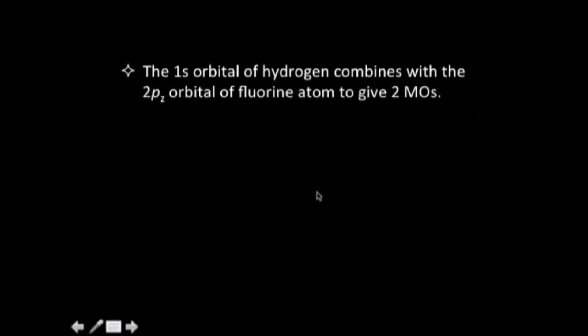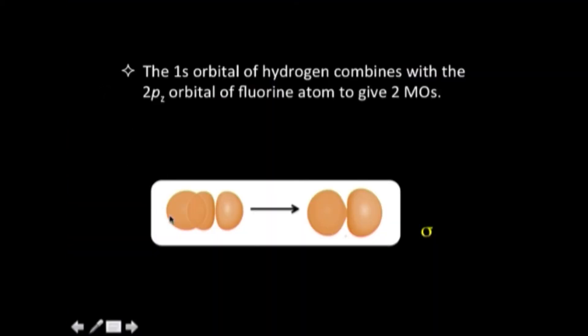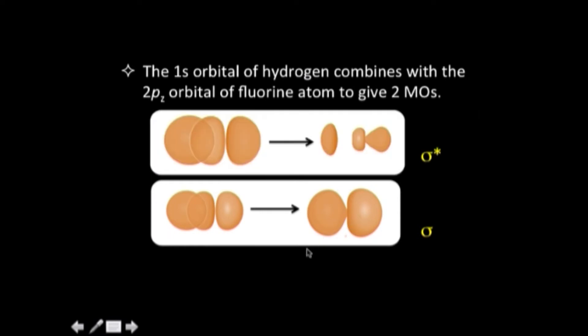Effectively, what will happen is that the 1s orbital of hydrogen will combine with the 2pz orbital of fluorine to give two molecular orbitals. This 1s orbital — spherically symmetrical — and the 2pz of fluorine combine constructively to give a sigma bonding molecular orbital. The destructive combination gives an antibonding molecular orbital. So 1s of hydrogen and 2pz of fluorine combine together to give two molecular orbitals. The other 2p orbitals of fluorine — px and py — stay as non-bonding because they are not going to interact with the 1s orbital of hydrogen.